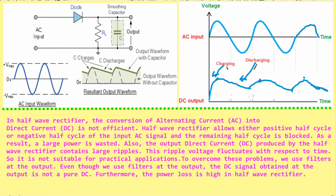In a half-wave rectifier, the conversion of alternating current AC into direct current DC is not efficient. The half-wave rectifier allows either the positive or negative half cycle of the input AC signal and the remaining half cycle is blocked. As a result, a large amount of power is wasted. Also, the output DC produced by the half-wave rectifier contains large ripples, and this ripple voltage fluctuates with respect to time, so it is not suitable for practical applications. To overcome these problems, we use filters at the output.